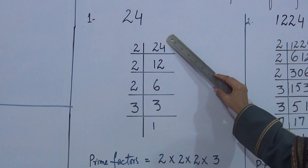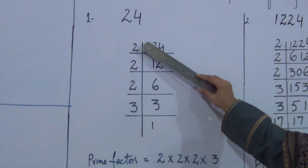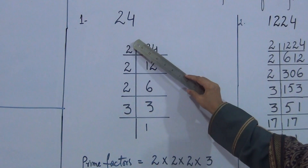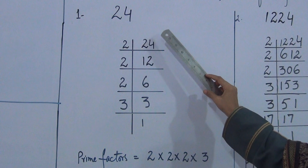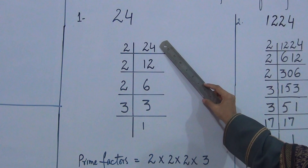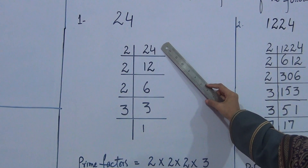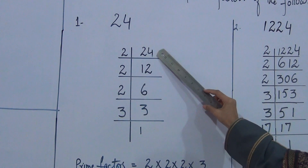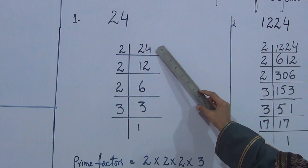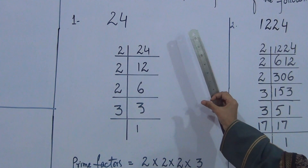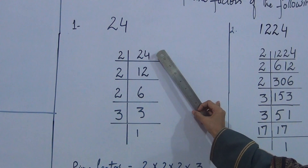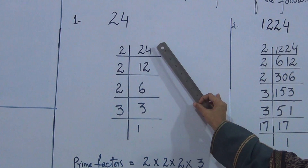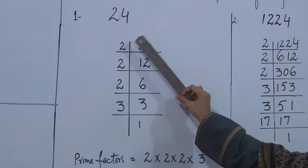First, we divide 24 by 2. Every even number can be divided by 2. How do we know a number is even? We check the last digit. If the last digit is 0, 2, 4, 6, or 8, it is an even number. An even number is always completely divisible by 2.